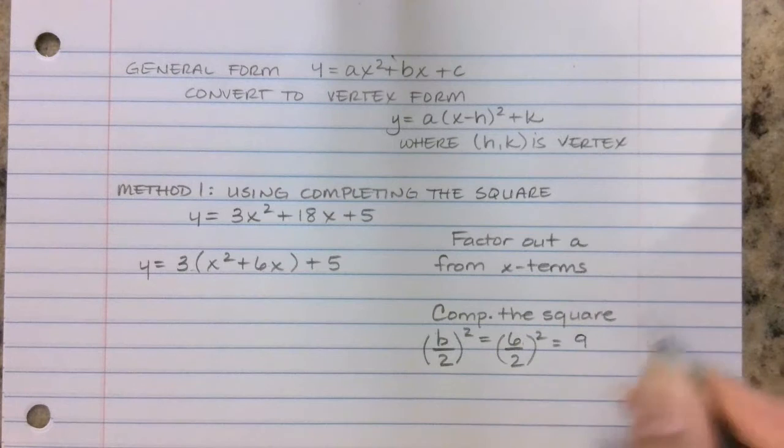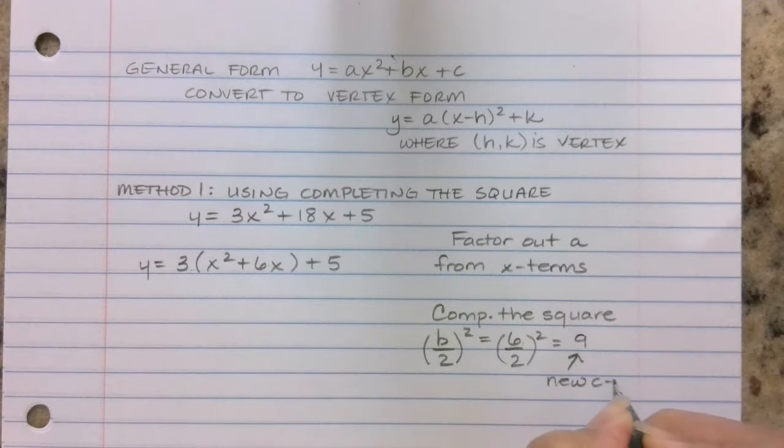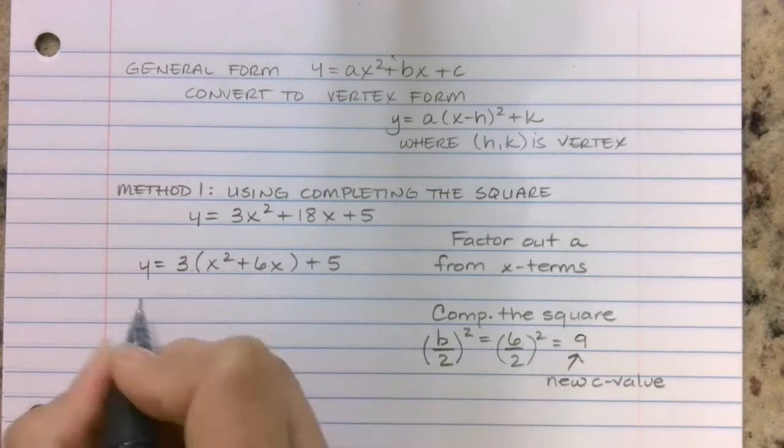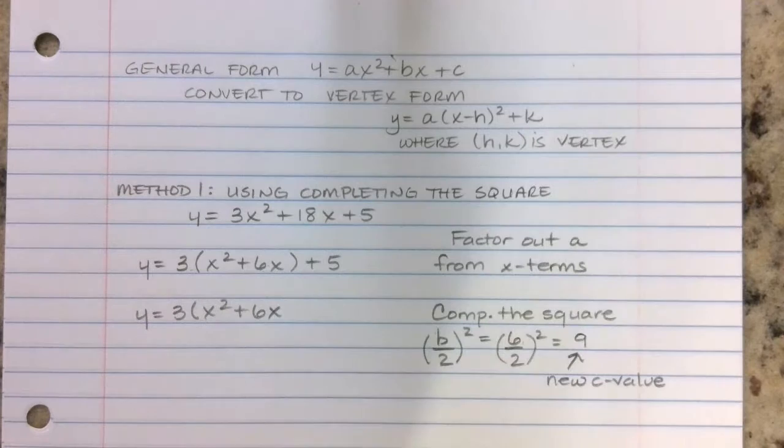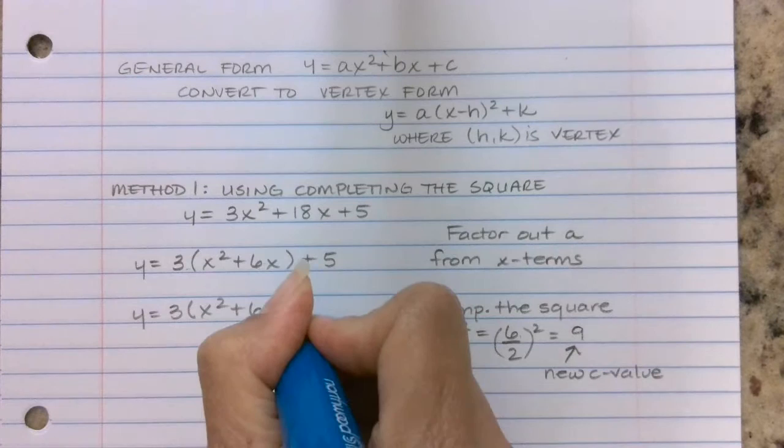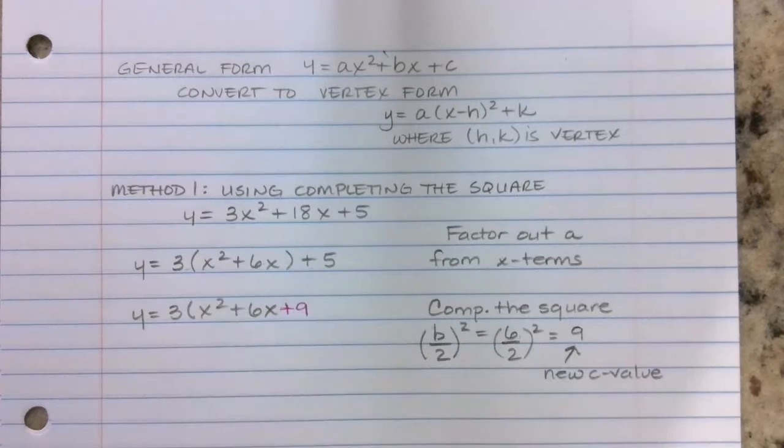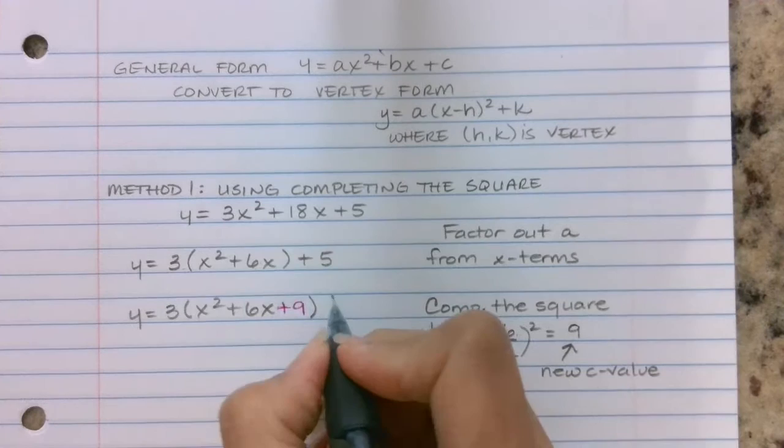So this here, let's call this my new c value inside the parentheses. So I'm going to rewrite my function: y = 3(x² + 6x + 9). I'm going to change the color just to make it a point, and I'm inserting a brand new value that wasn't even part of the problem in the first place.